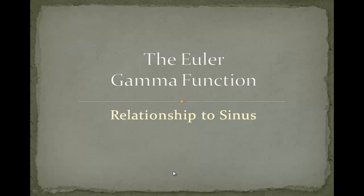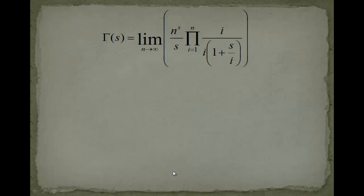And in order to derive this stuff, we will need the Gauss representation of the gamma function because it's the easiest way I know to derive this. So, what we will do is we will take the Gauss representation of the gamma function as this limit stuff.